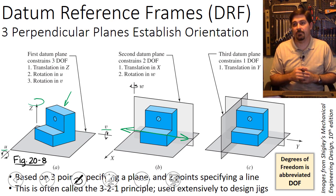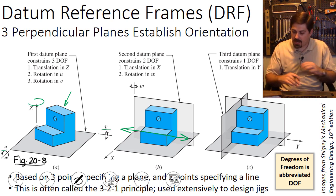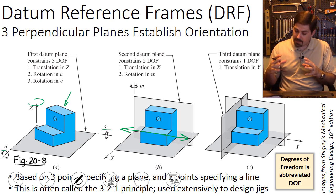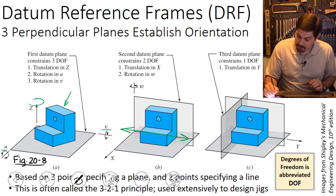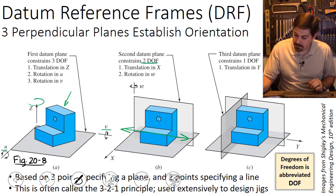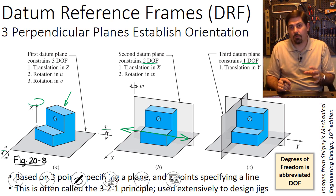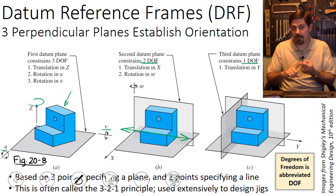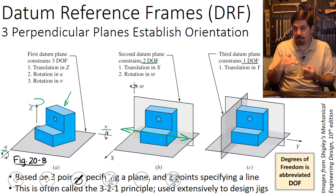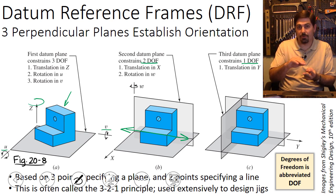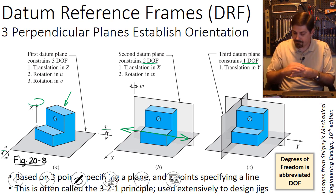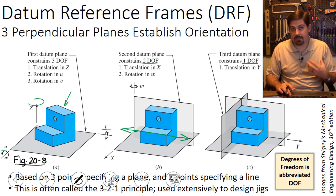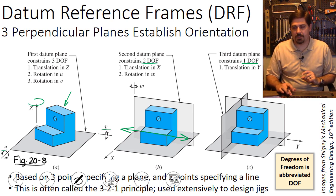This is one way to establish a datum reference frame. We went from constraining three degrees of freedom, then two, then one — that's how we got all six. This 3-2-1 principle is by far the most common way that tooling jigs are set up to immobilize parts: the first datum removes three DOF, the second removes two more, and the third removes the last one. We'll show a couple of exceptions to this general rule in a moment.